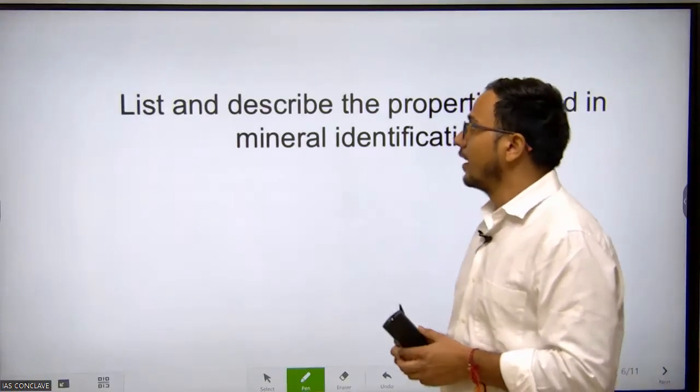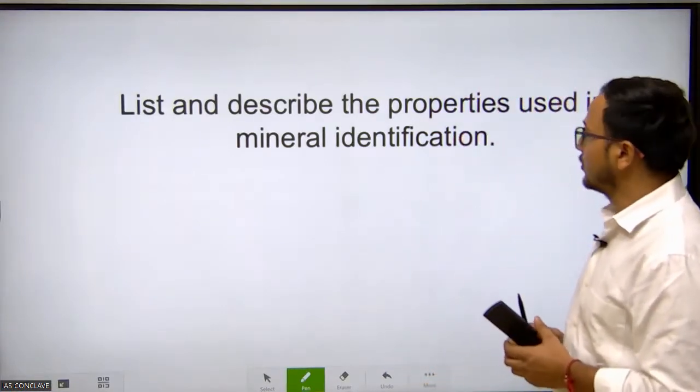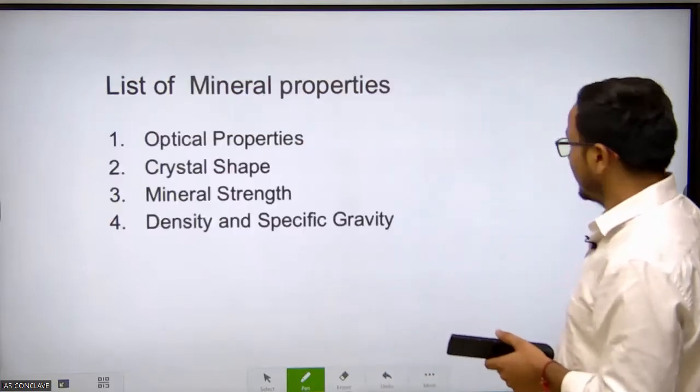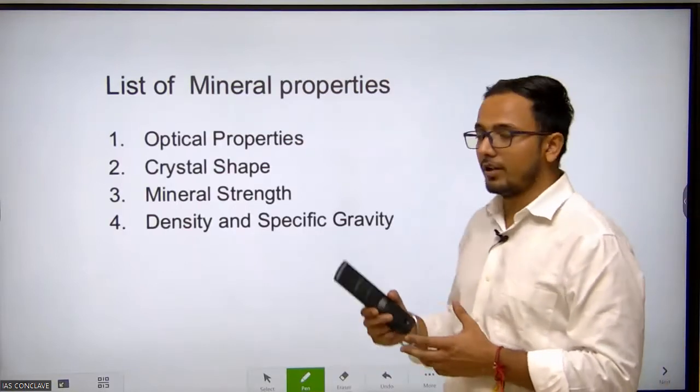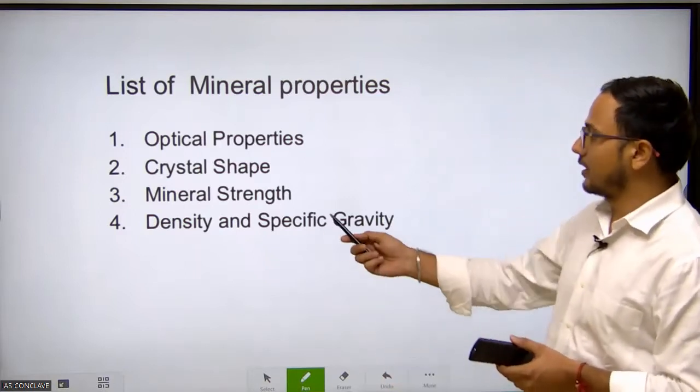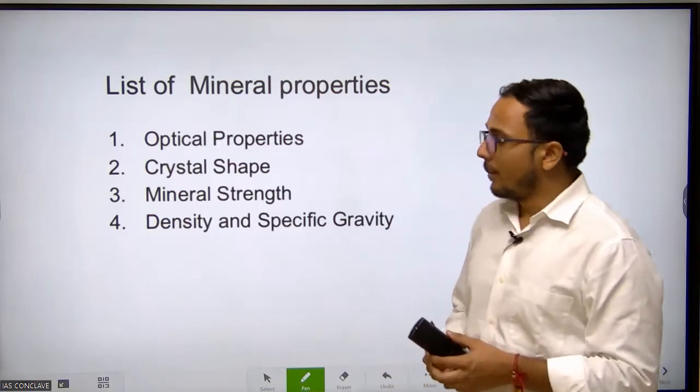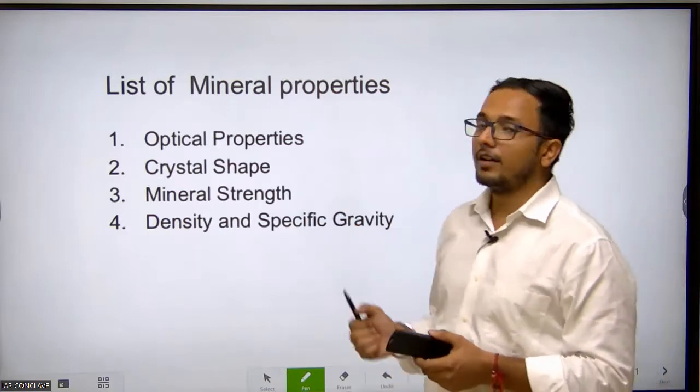In this session we are covering the list and description of properties used in mineral identification. In this series we've already covered optical properties, and in upcoming sessions we'll cover mineral strength as well as density and specific gravity. But in this session we're going to cover crystal shape.